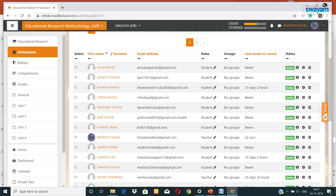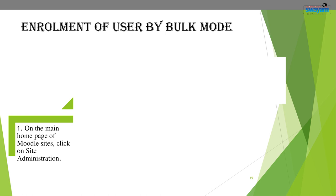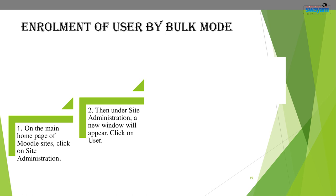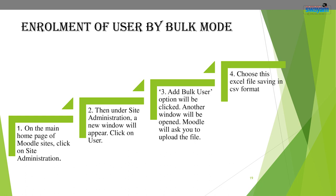If the course developer creates a list of users in Microsoft Excel, the list can be saved in CSV format and bulk user uploading can be done. For bulk uploading of users, on the main homepage of the Moodle site, click on Site Administration, then click on User, then click on 'Add Bulk User'. A new window will open and Moodle will ask you to upload the file. Choose the Excel file saved in CSV format. Both manual enrollment and bulk upload methods can be used to add and enroll users.